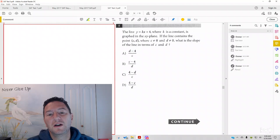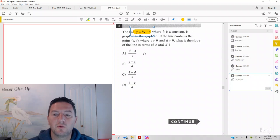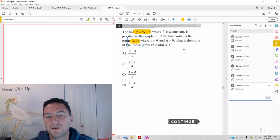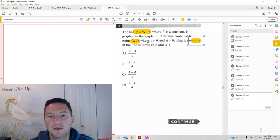the line y equals kx plus 4, where k is a constant, is graphed in the xy plane. If the line contains the point c, d, where c doesn't equal 0 and d doesn't equal 0, what is the slope in terms of c and d?